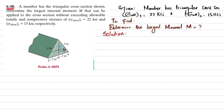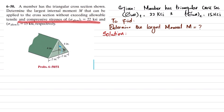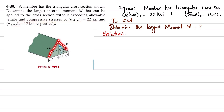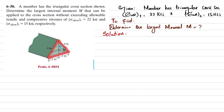Welcome back, problem 6-50. The statement is: a member has a triangular cross section as shown. Determine the largest internal moment M that can be applied to the cross section without exceeding an allowable tensile stress of 22 ksi and compressive stress of 15 ksi. This is a triangular cross section where each side is 4 inches.